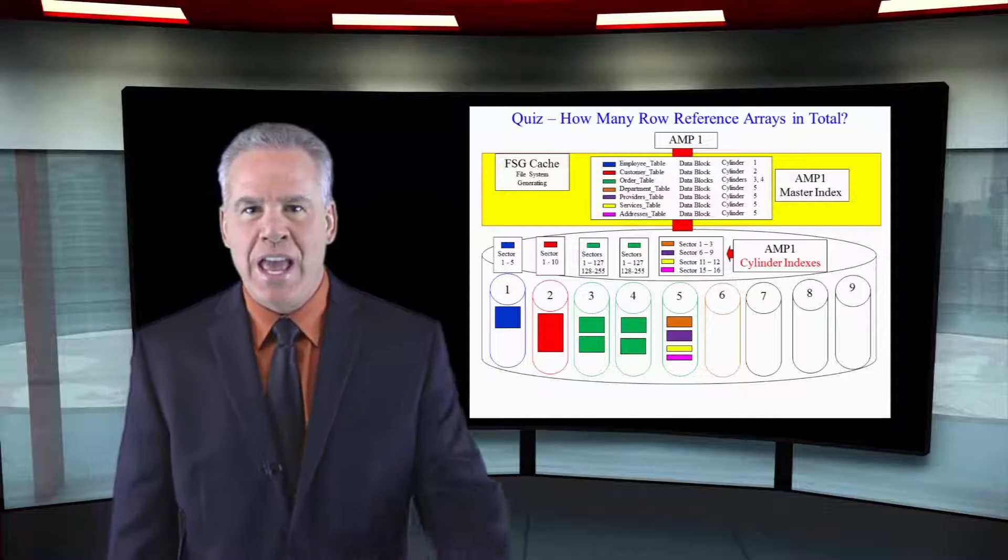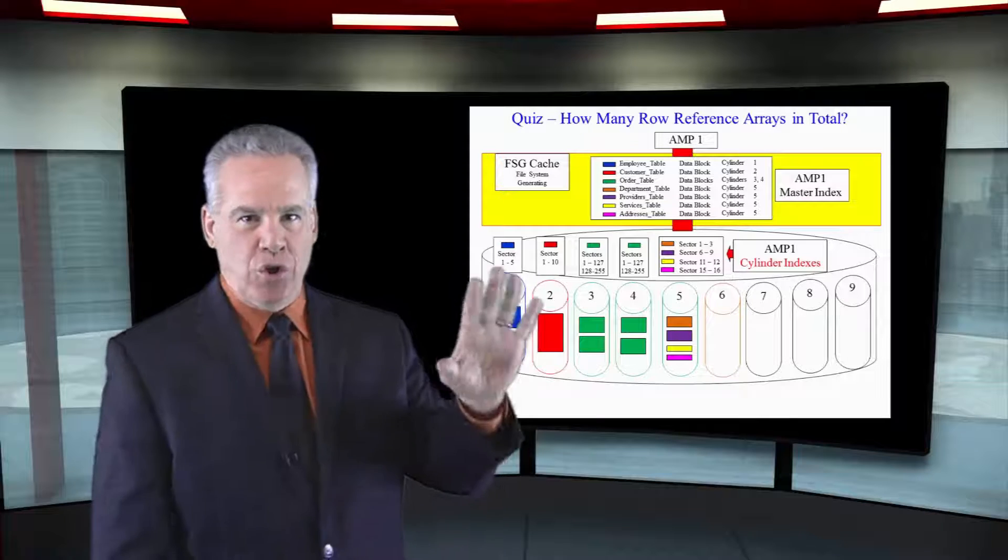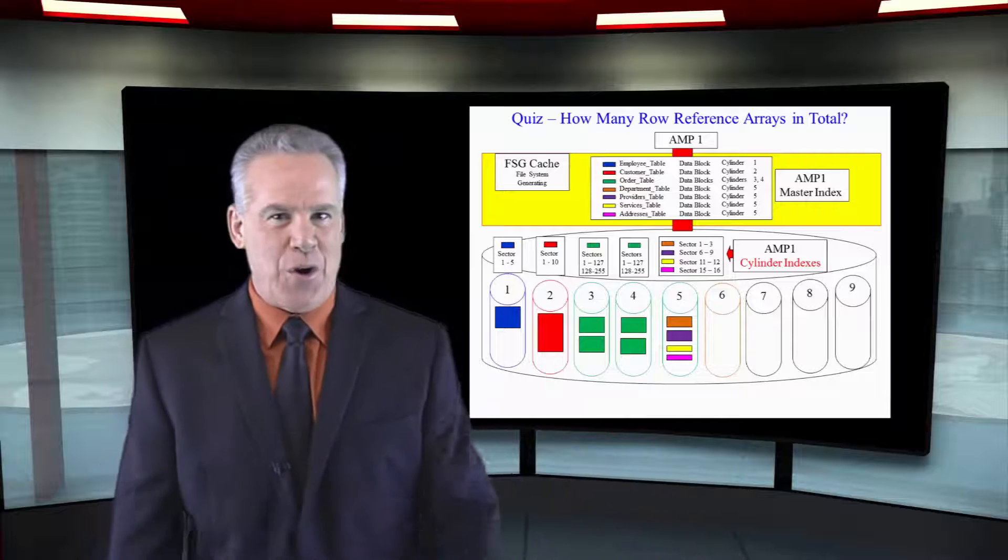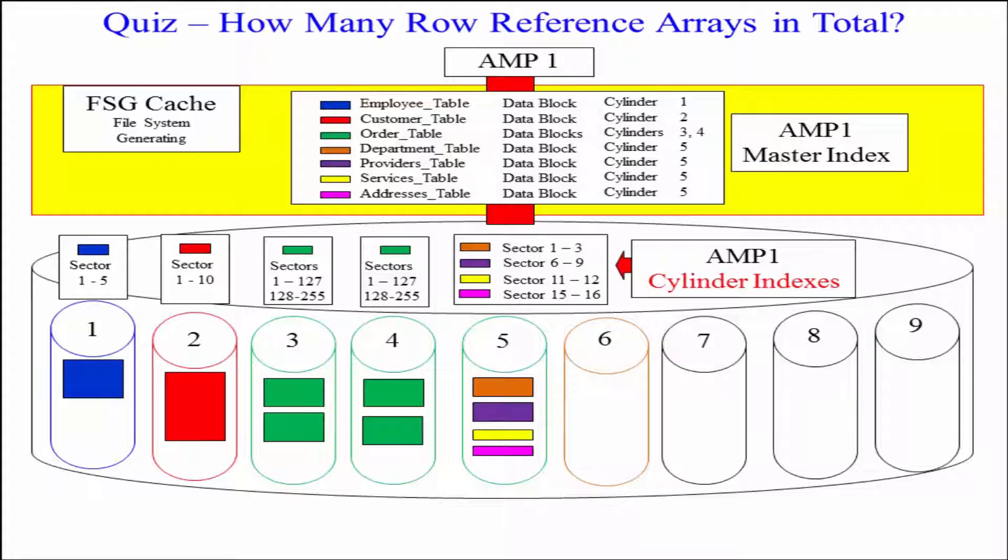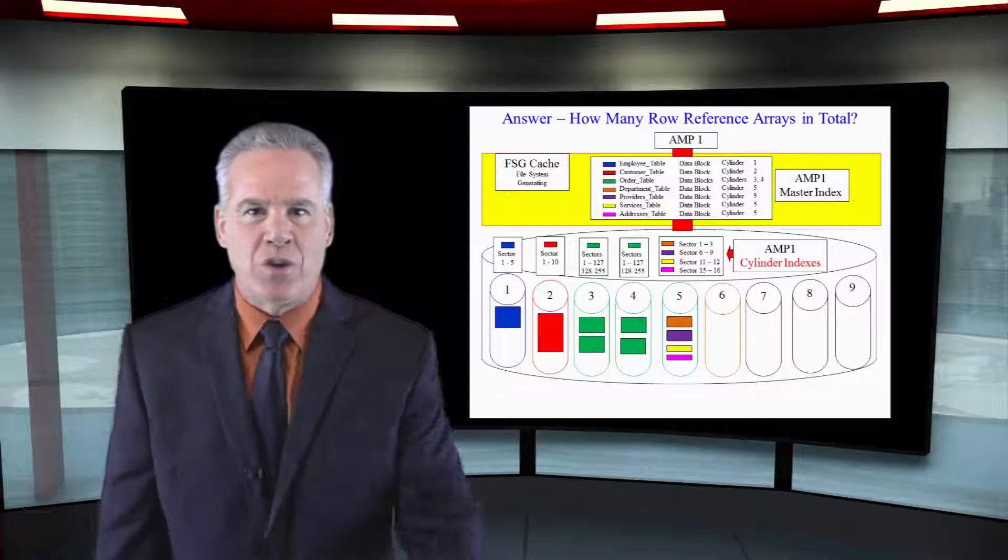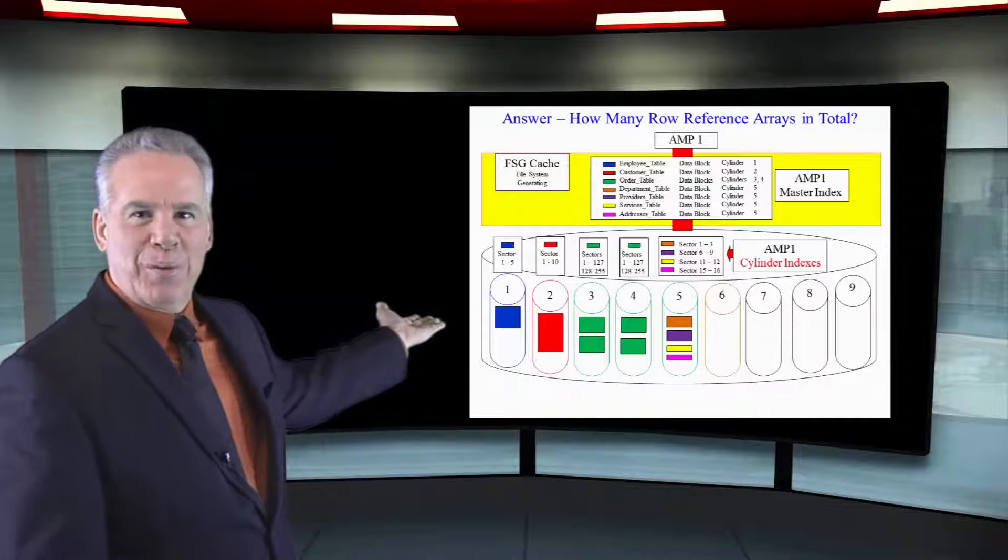Toughest question yet. How many row reference arrays do you see in this entire picture? There are ten row reference arrays in this picture. One per block.